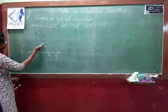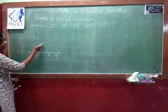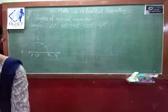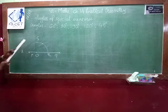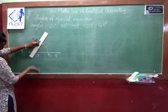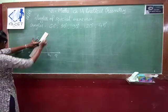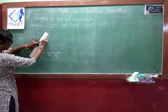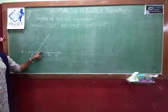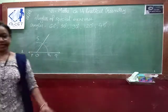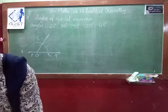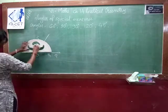Now what we have to do is join O and S — we have to join these two points. So join it. This is your 60 degree angle. If you want to measure, you can use a protractor and check whether it is 60 degrees or not.